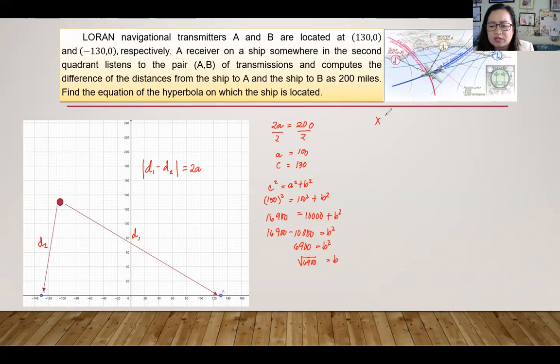So take note that when the center of the hyperbola is at (0,0), then we have this format. So we will have X squared over A, 100 squared, then minus Y squared over 6,900 raised to the second power equals 1.